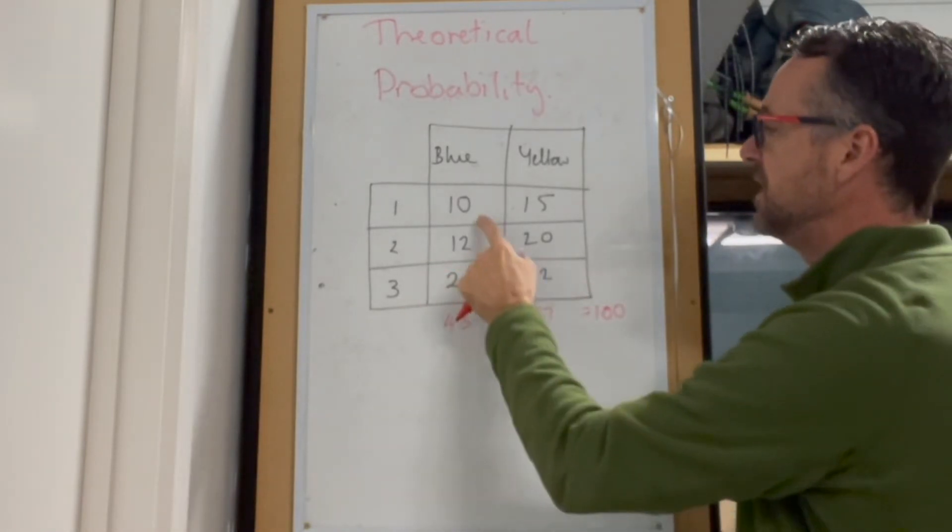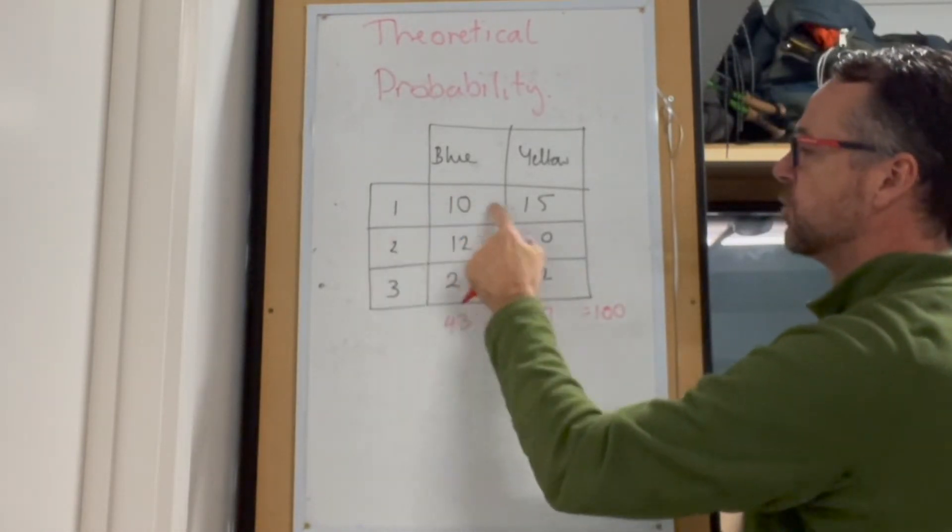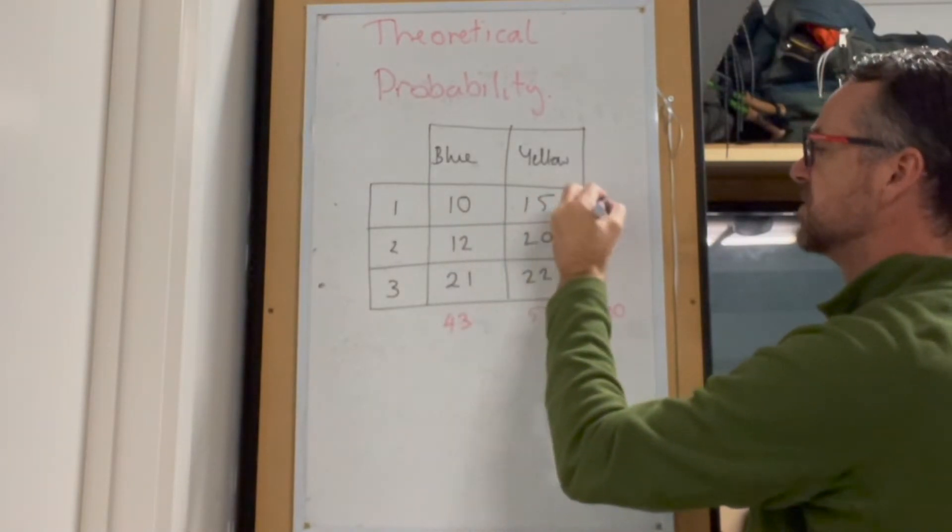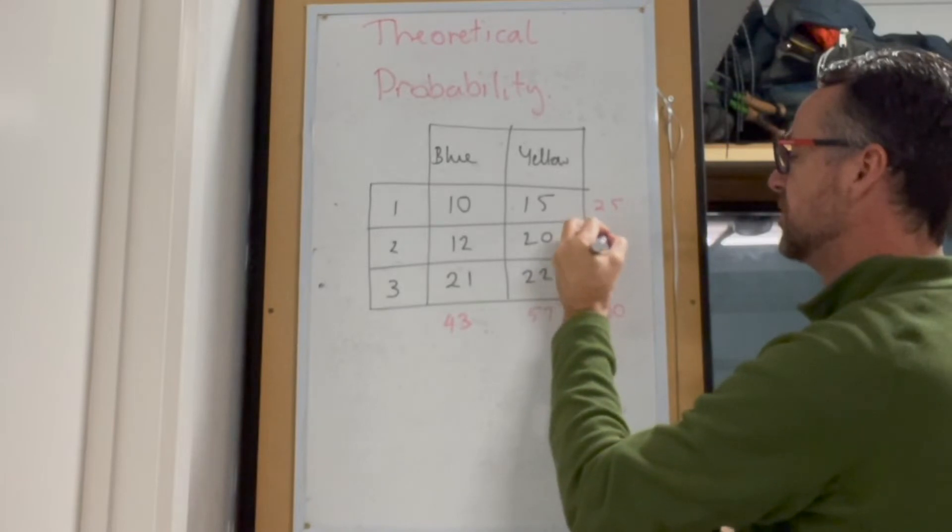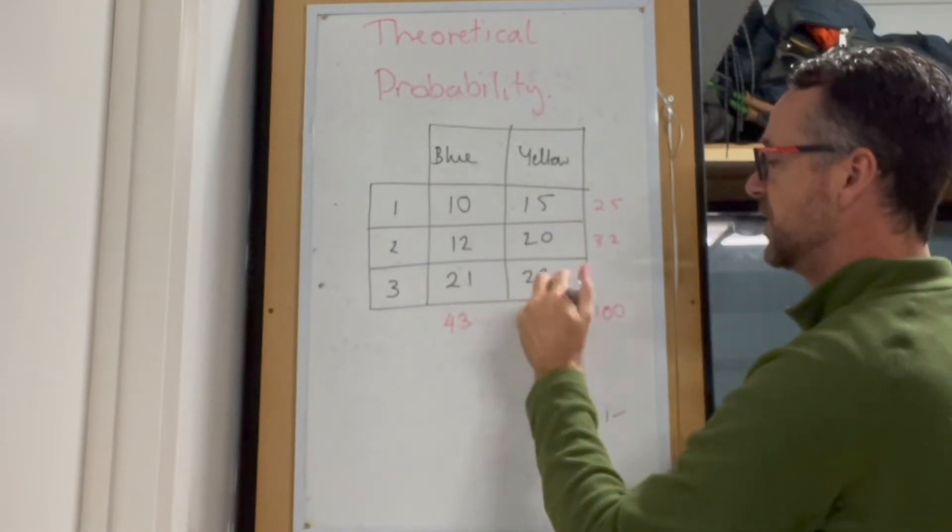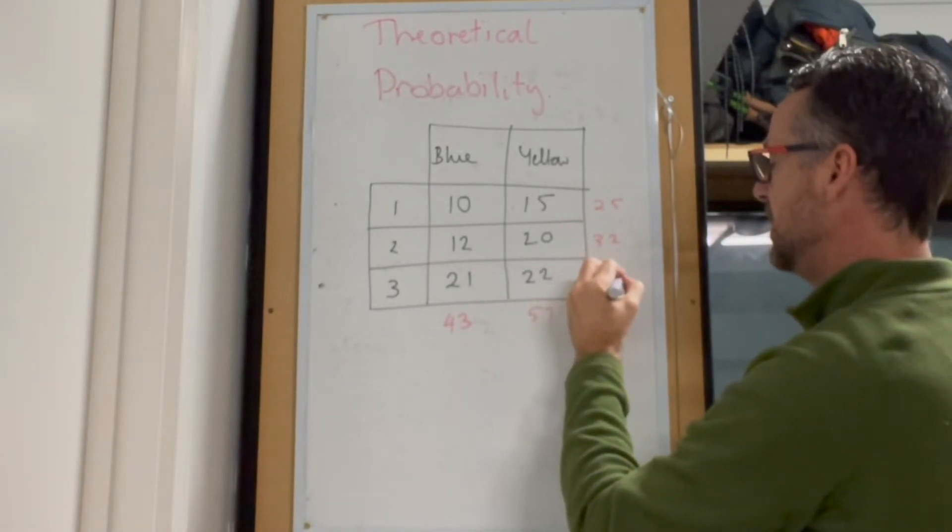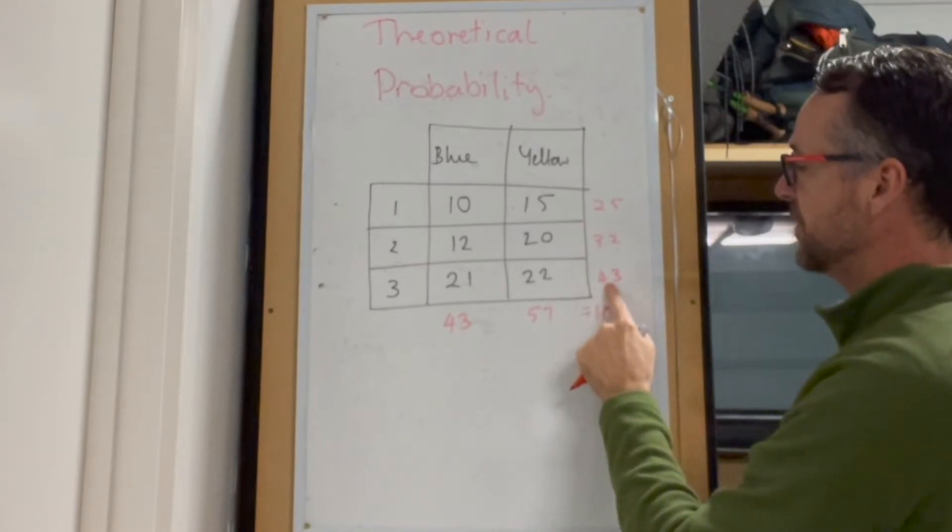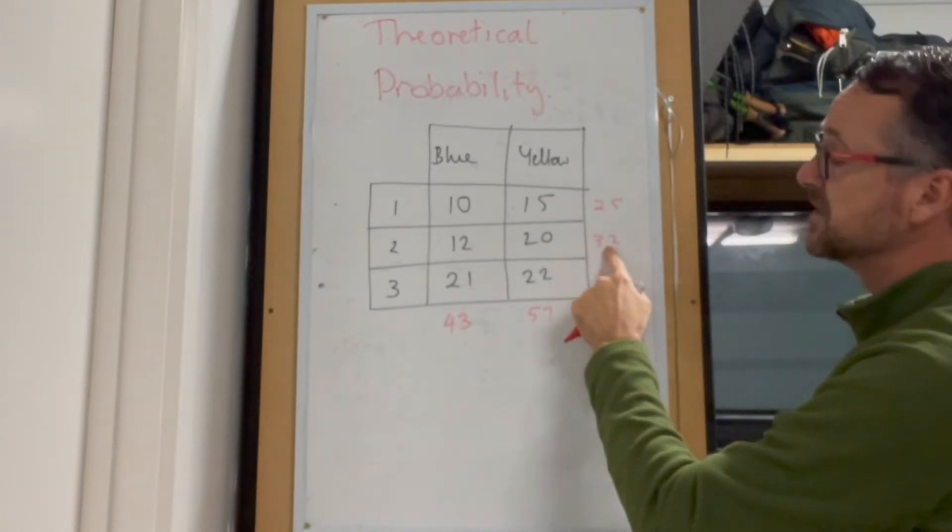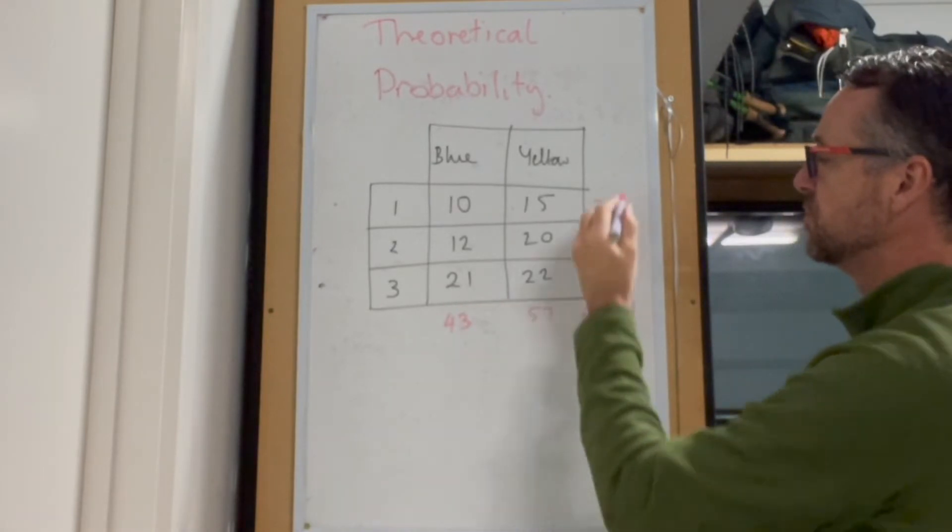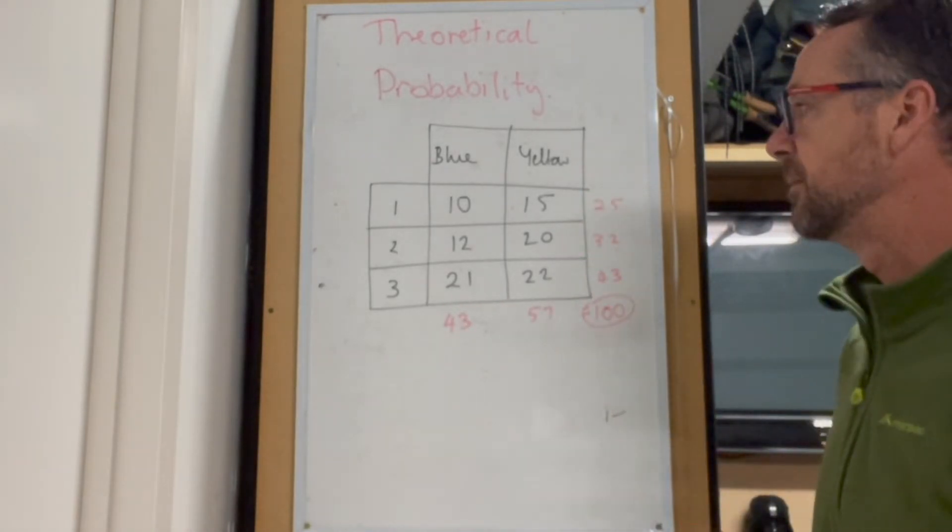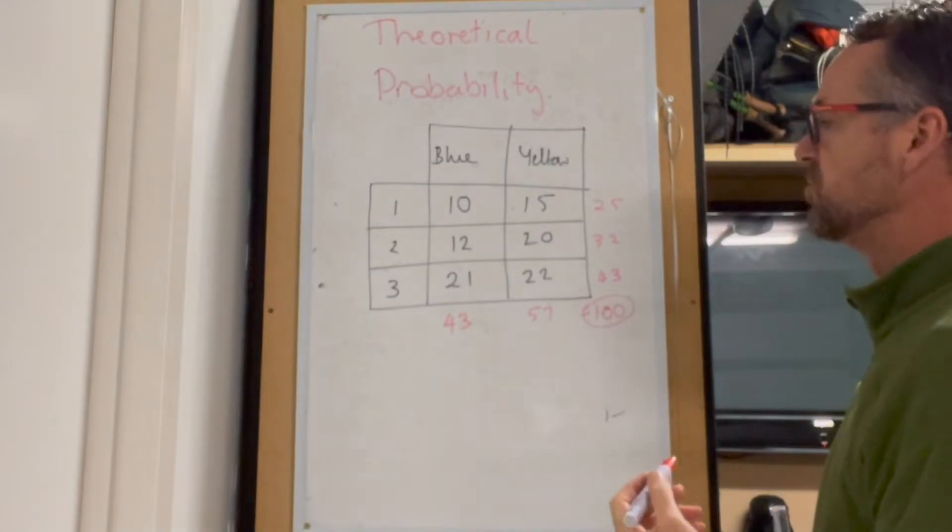Now, what we should also have here is how many counters have got the number one on the back. So here 10 plus 15 is 25, 12 plus 20 is 32, and 21 plus 22 is 43. And 43 plus 32 is 75, 75 plus 25 is also 100. So those two should always add up. If they don't, then you've made an error in your addition somewhere.